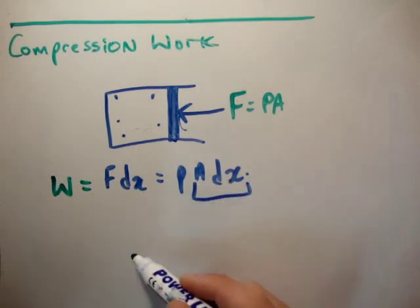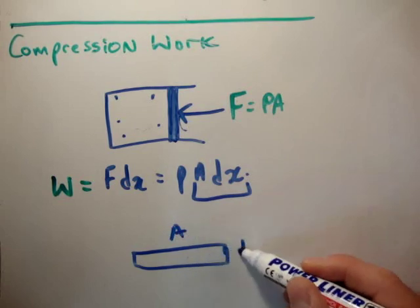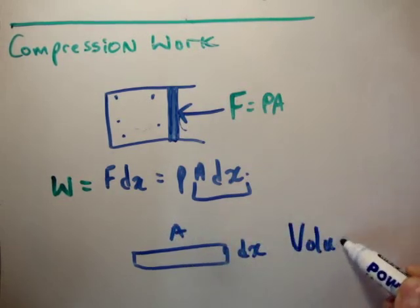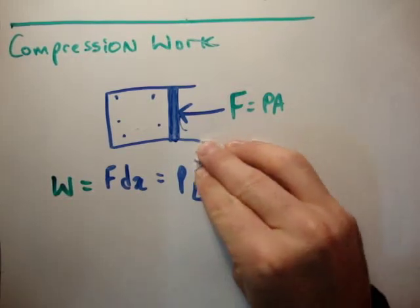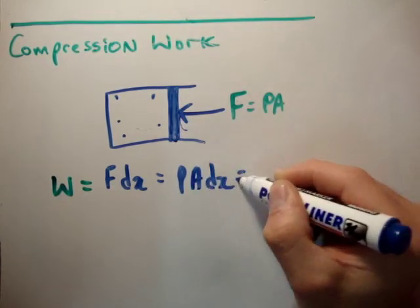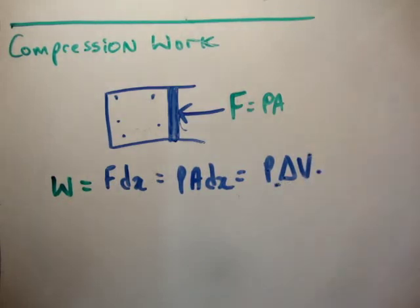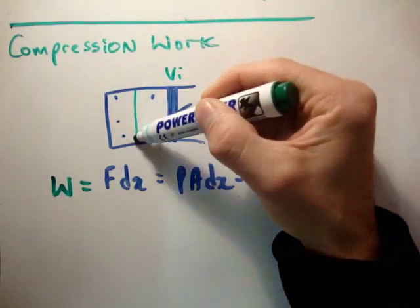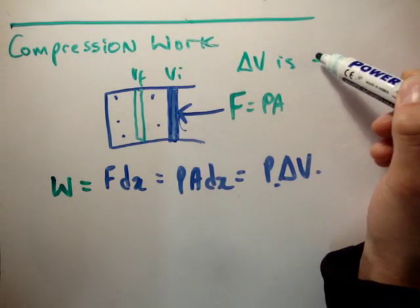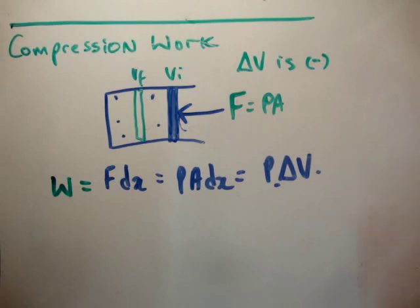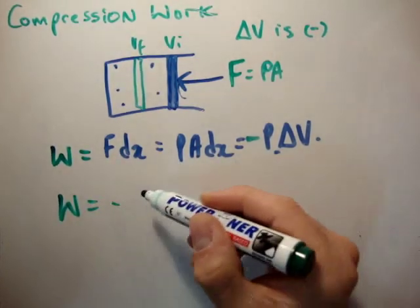Think about A·dx: if A is the area and dx is the thickness, then area times thickness is a volume. So A·dx is a volume element dV. That means P·A·dx = P·dV — the pressure multiplied by the change in volume. Now, when we compress the gas, the volume goes from V-initial to a smaller V-final, so deltaV is negative. Since work being done on the system must be positive, we must add a negative sign, giving us: work done equals minus P·deltaV.